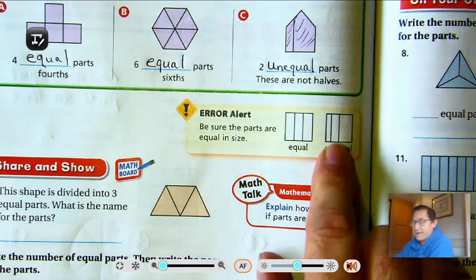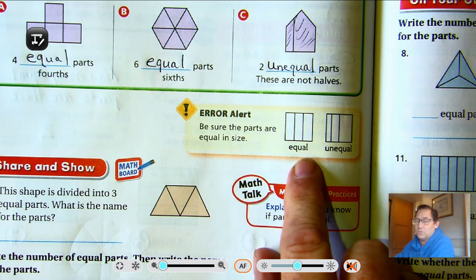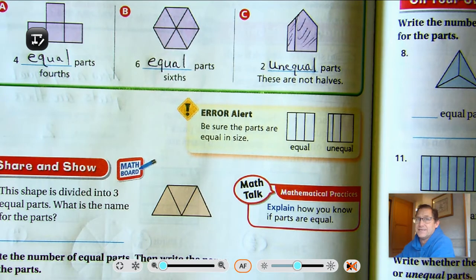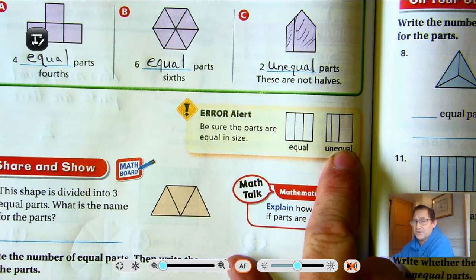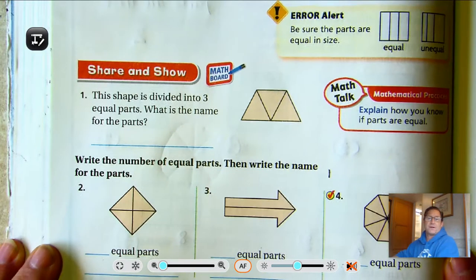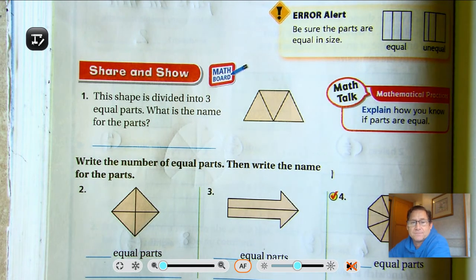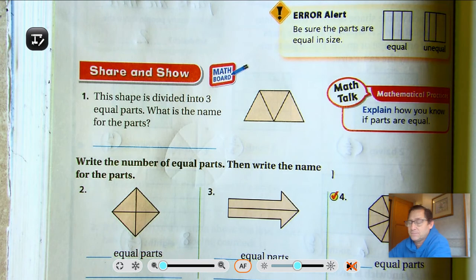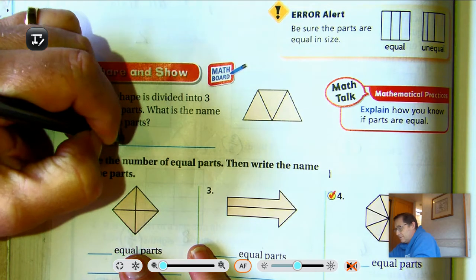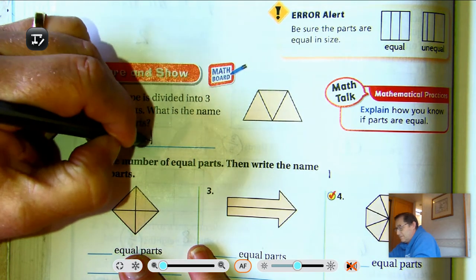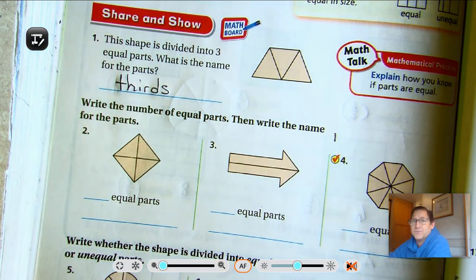Okay. So an error alert. Some students will say, okay, yeah, it's thirds. It's got three pieces. But they're not equal. Fractions, each part has to be an equal amount. So this one would be called three thirds. This is not three thirds. Number one, this shape is divided into three equal parts. What is the name for the parts? Well, three parts are called thirds. And we should be able to spell the word correctly. So take your time to make sure you spell it right.